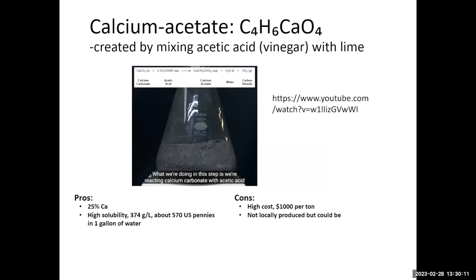Calcium acetate can be created by mixing vinegar with lime or calcium carbonate. It has about the same calcium concentration as gypsum — around 25% — but its solubility is much greater: you can dissolve almost 570 penny-equivalents in a gallon of water. Compare that to one penny in a quarter gallon for gypsum. Calcium acetate makes more sense in soils with low soil water content.